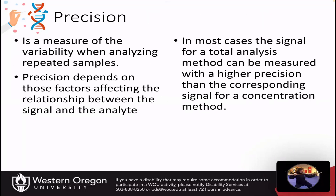Precision is a measure of the variability when analyzing repeated samples. It also depends on those factors that affect the relationship between the signal and the analyte. Some of the same situations that affect accuracy can also affect precision, but you can also have variability in your instrumentation that causes you to get different measurements every time you measure. There may be some inherent variability in your instrumentation that gives you a certain level of precision.